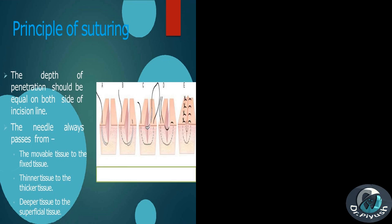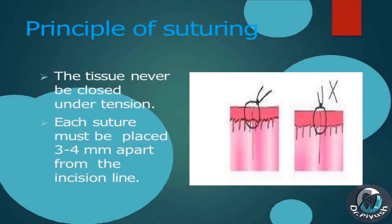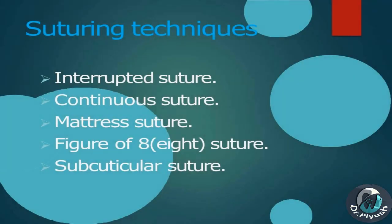The needle always passes from the movable tissue to the fixed tissue, from thinner tissue to thicker tissue, and from deeper tissue to superficial tissue. The tissue should never be closed under tension. Each suture must be placed 3–4 mm apart from the incision line.